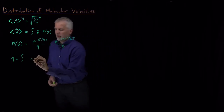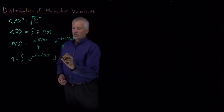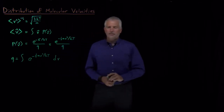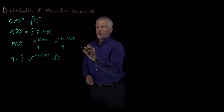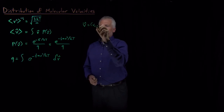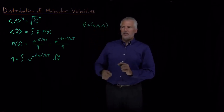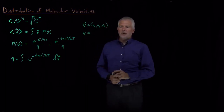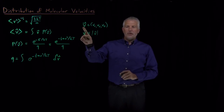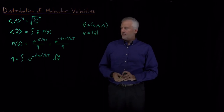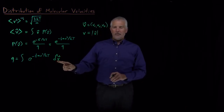The partition function is the Boltzmann factor e to the minus energy over kT, integrated over all possible values of the velocity. Let me distinguish between velocities and speeds. When I write v with an arrow on top, that's a velocity vector with magnitude and direction in x, y, and z. Speed, as opposed to velocity, is just the magnitude of the velocity vector. So the partition function involves a triple integral over dvx, dvy, dvz.